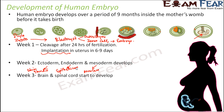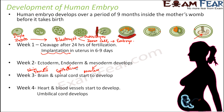By week 3, critical organs like the brain and spinal cord start to develop. By week 4, the heart and blood vessels start to develop, and the umbilical cord also develops. A doctor performing a scan at 10 or 12 weeks should clearly be able to see the presence of the brain, heart, blood vessels, and spinal cord. When we say week 3 for brain development, that means it starts to develop — it takes more time to develop completely.